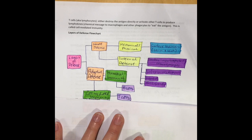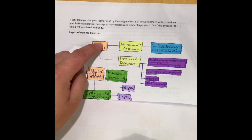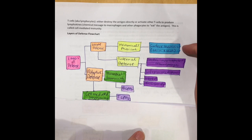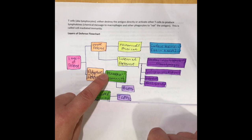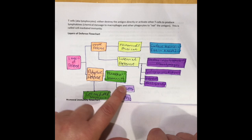Here's a flow chart showing the layers of defense. Innate defenses are broken into mechanical or physical and internal defenses. Mechanical or physical examples are surface barriers — the skin and mucous membranes. Internal defense examples are white blood cells (neutrophils and macrophages), inflammation, fever, and enzymes. We also have adaptive defenses: humoral immunity is run by B cells making antibodies, and cell-mediated immunity is run by T cells.